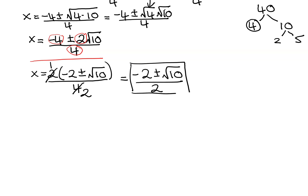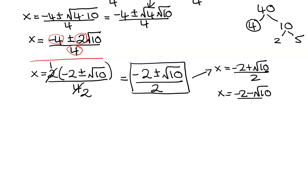If you wanted to break it down into its two separate solutions, you'd write x equals negative 2 plus the square root of 10 over 2, and x equals negative 2 minus the square root of 10 over 2. So that is another way of writing the answer.